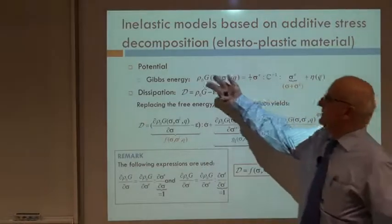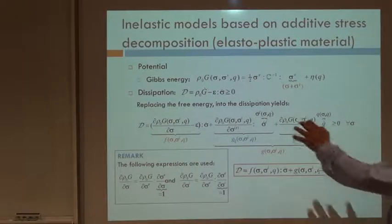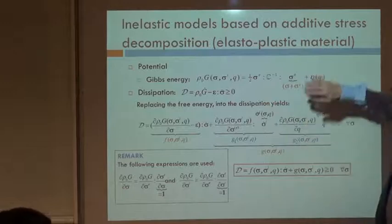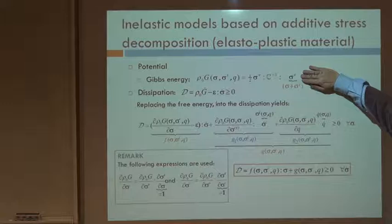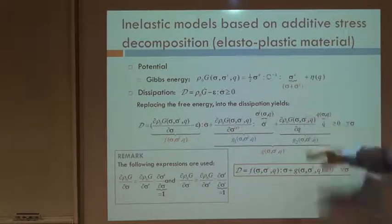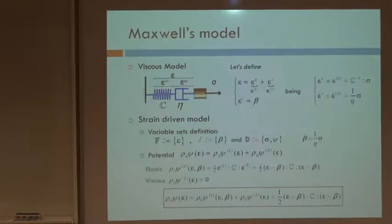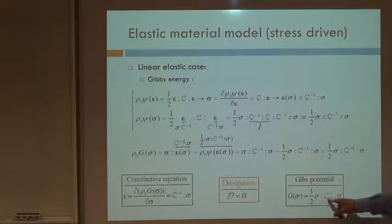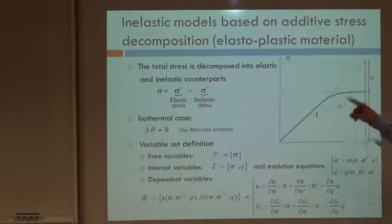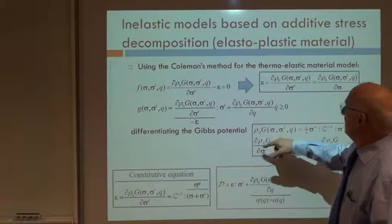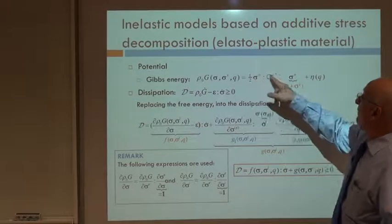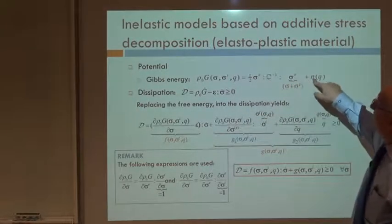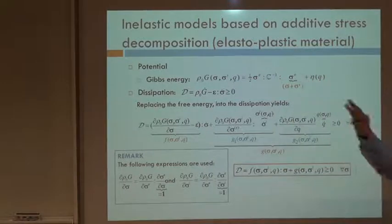Next step: the Gibbs energy. We postulate the Gibbs energy as the sum of two parts. One, which is the elastic part — what would appear if the material was fully elastic. For an elastic material, the Gibbs potential turns out to be one half of sigma C minus one sigma. Now let's consider that potential: one half of the elastic part of the stresses, sigma-e, C minus one sigma-e, plus another potential which depends only on Q. We postulate this form for this model.